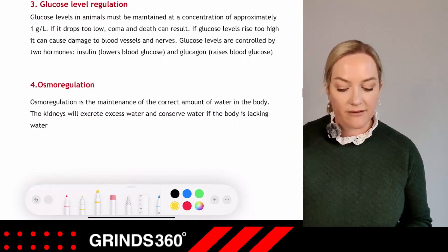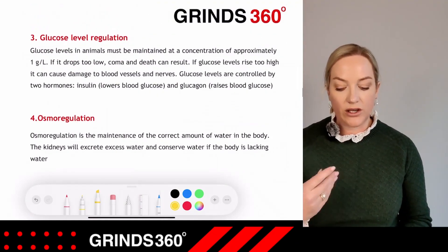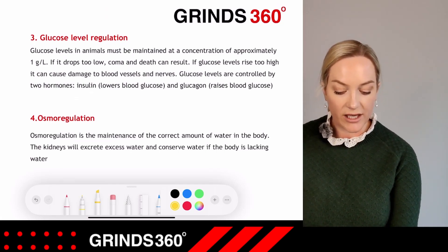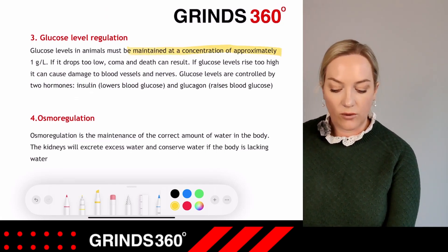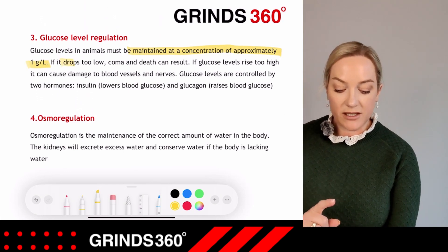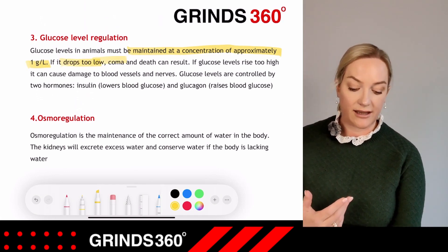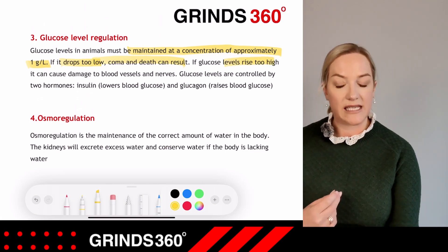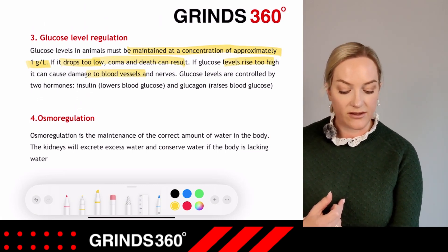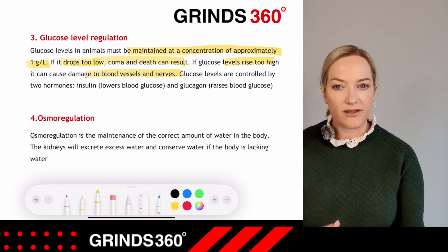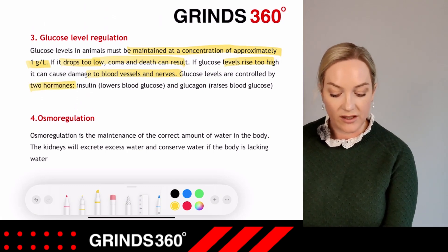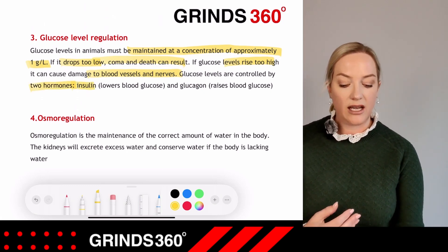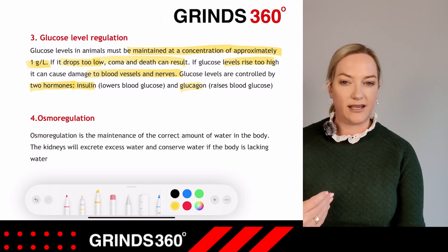Glucose level regulation: glucose levels in animals must be maintained at a concentration of approximately 1 gram per litre. If it drops too low, coma and death can result; if glucose levels are too high, it can cause damage to blood vessels and nerves. Glucose levels are controlled by two hormones: insulin, which lowers blood glucose, and glucagon, which raises blood glucose.